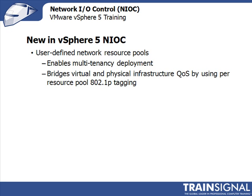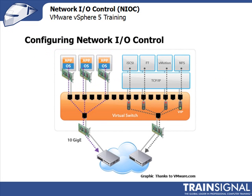In just a second, I'll show you how to enable or create one of these user-defined network resource pools. So now we're to the point of configuring Network I.O. Control. To do that, we first need a virtual distributed switch and we need to be using vSphere Enterprise Plus. Let's go over to our vSphere client and I'll show you how to do it step by step.